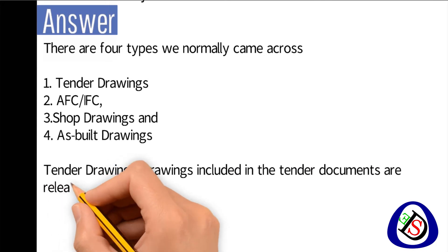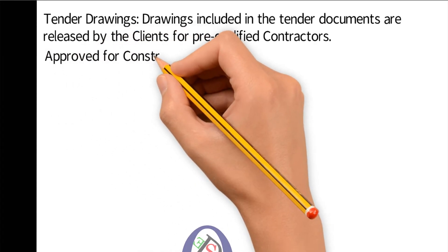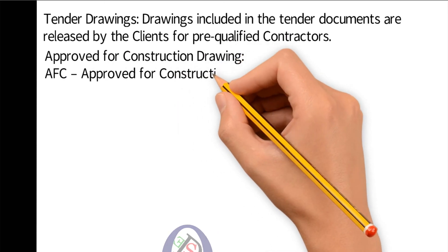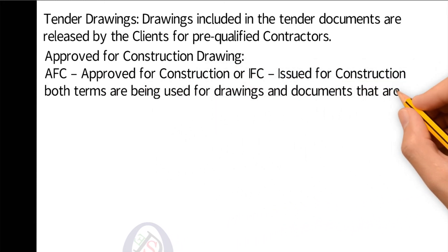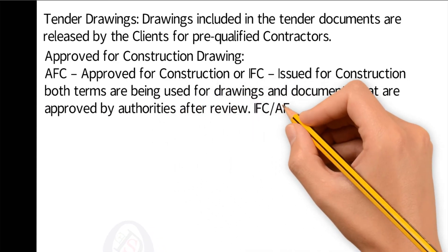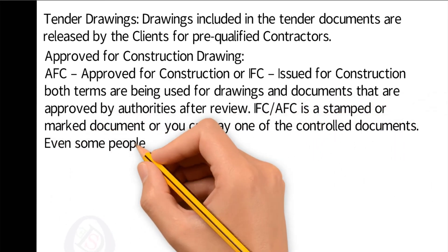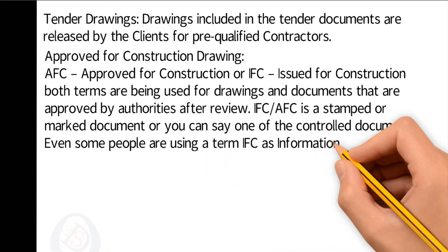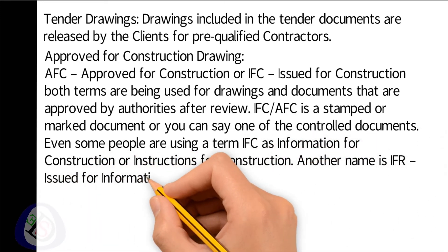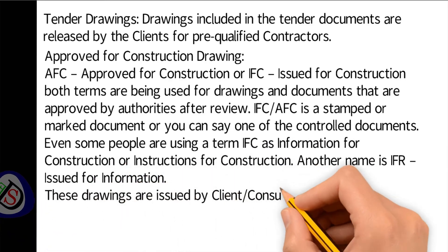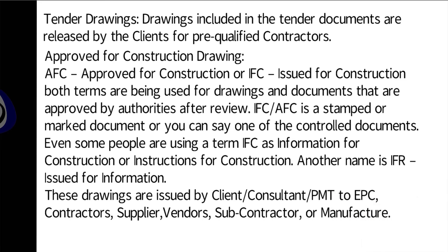Approved for Construction (AFC) or Issued for Construction (IFC): both terms are used for drawings and documents approved by authorities after review. AFC or IFC is a stamped or marked controlled document. Some people also use IFC as 'Information for Construction' or 'Instruction for Construction.' Another name is IFI — Issued for Information. These drawings are issued by the client, consultant, or PMT to EPC contractors, suppliers, vendors, subcontractors, or manufacturers.